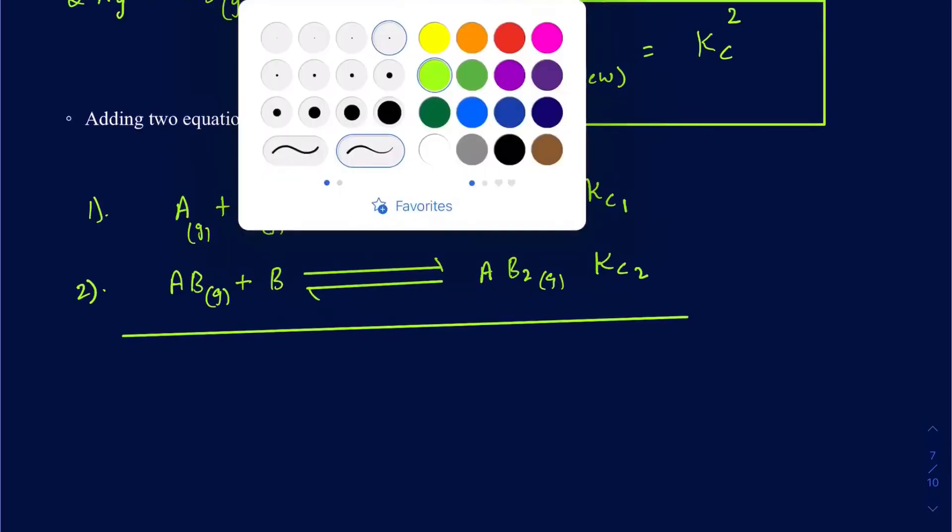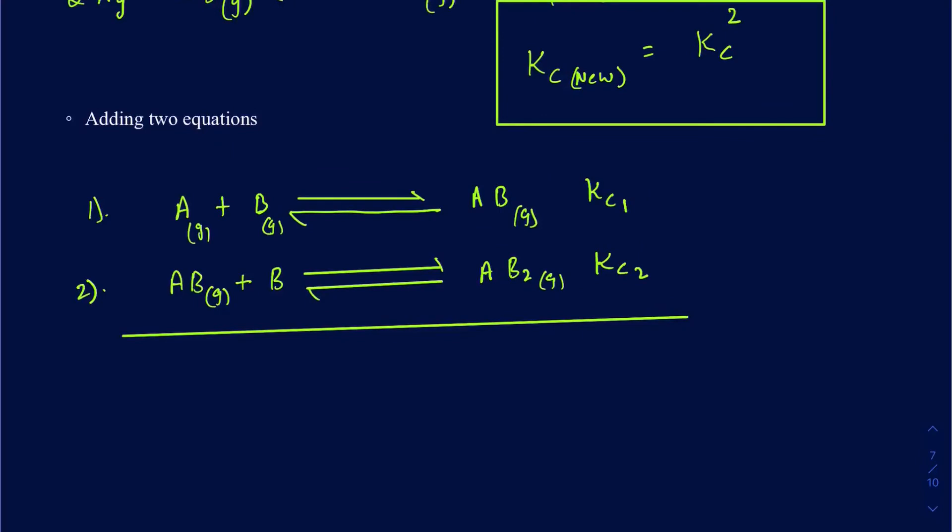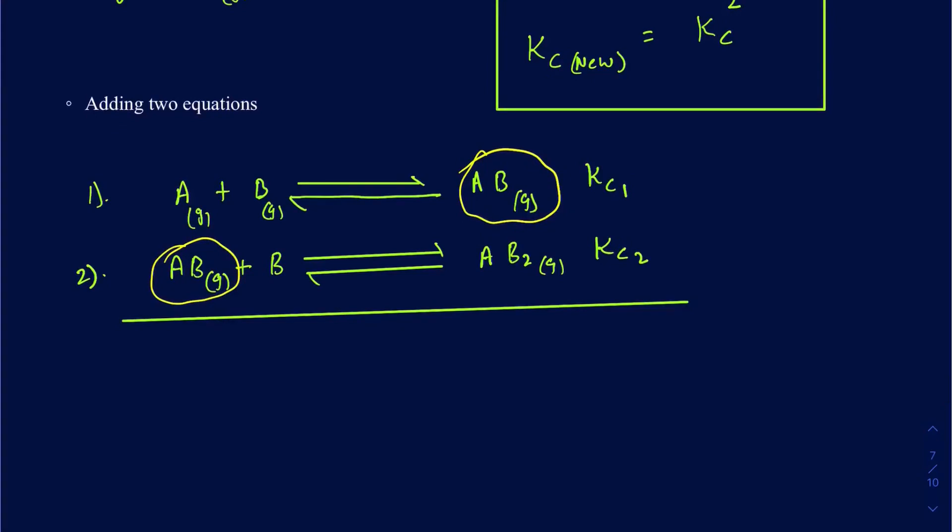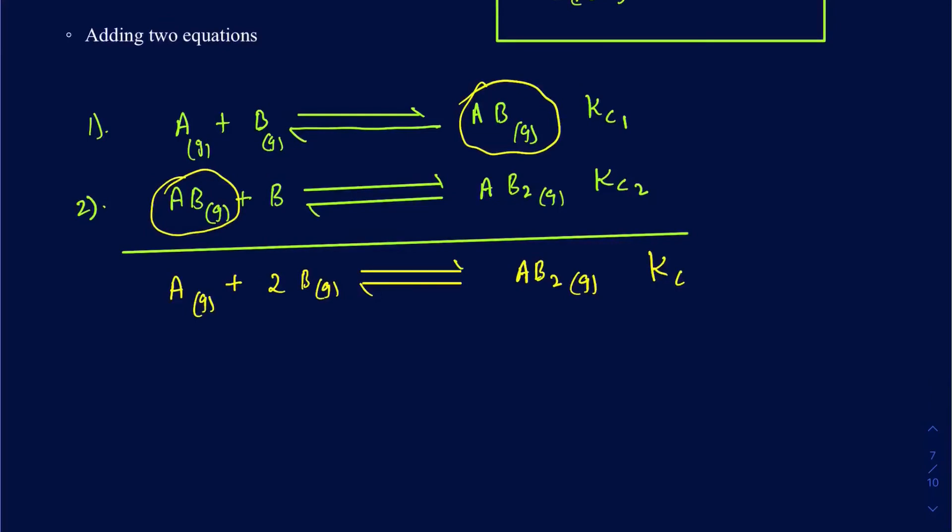When you add up two reactions in Hess's Law, your overall delta H or delta G in that particular case just gets added up. Now, in this case, when I'm adding up, I remember this AB is just going to be common on both sides, so you can also call that intermediate. That's just going to cancel out. So what's left behind is A gas plus 2 B gas, because we've got two B's there. And then we have AB2 gas. And then this new Kc here for this particular equation is going to be equal to the multiplication. So it's going to be Kc1 times the Kc2. So whatever reactions you are multiplying in there, that's going to give you the new Kc.